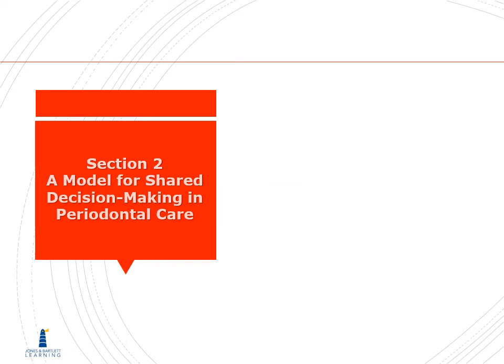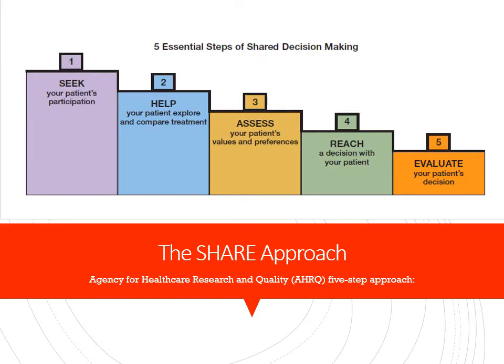Moving on to section two — a model for shared decision-making in periodontal care, starting on page 206. Here you'll see the five essential steps of shared decision-making. First, we want to seek our patient's participation — if they're not willing to do the work, there's no point. Second, we want to help our patients explore and compare treatment options. If there's an alternative to what you're recommending, it's a good idea to tell your patient what that alternative is, even if you think it's a terrible option — your patient might want it.